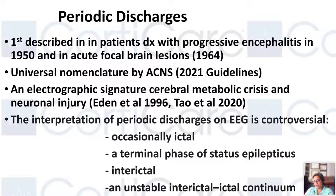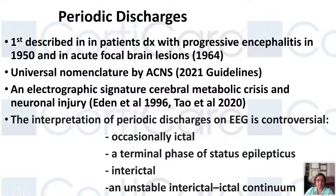These periodic discharges started to make their entrance into the epilepsy world sometimes in the 1960s, and were mostly seen in patients with encephalitis and focal brain lesions. The universal nomenclature and terminology for these patterns is given by ACNS — we have the latest 2021 guidelines. Starting in the late 1990s and into the 2020s, researchers began to figure out that these periodic discharges are basically the electrographic signature of metabolic crisis or neuronal injury — whatever clinical condition is present is making these periodic discharges happen.